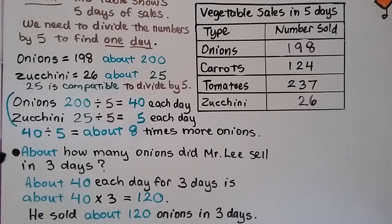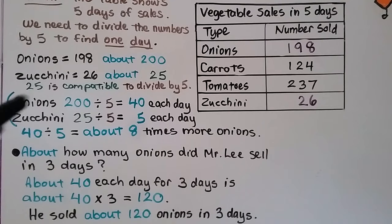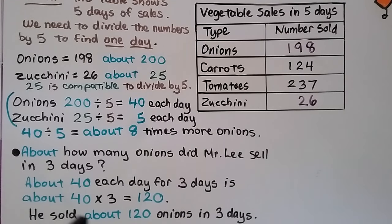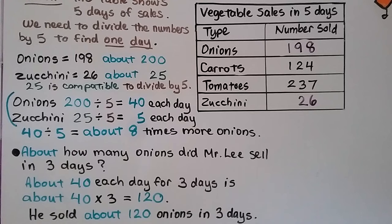The next question asks: about how many onions did Mr. Lee sell in 3 days? We know he sold about 40 each day, so we multiply 40 times 3, which equals 120. He sold about 120 onions in 3 days.